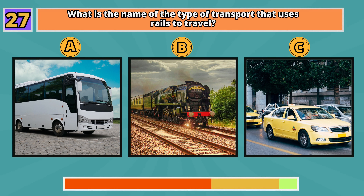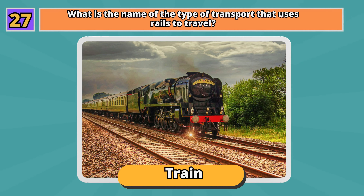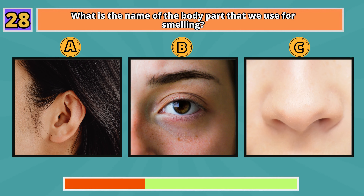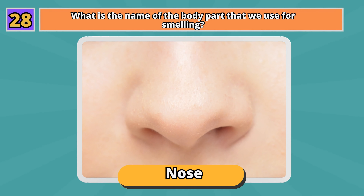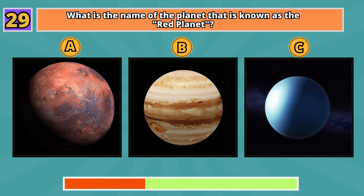What is the name of the type of transport that uses rails to travel? Train. What is the name of the body part that we use for smelling? Nose.